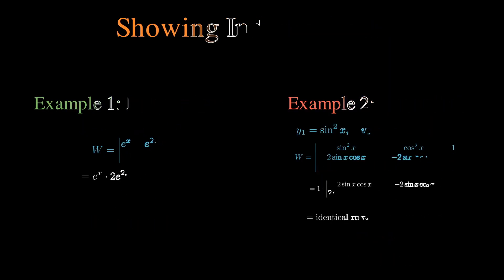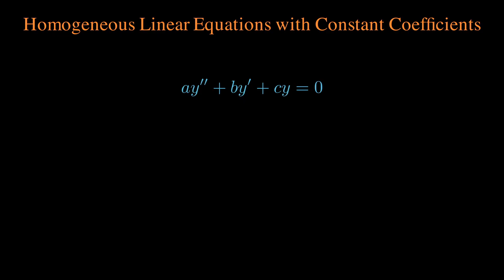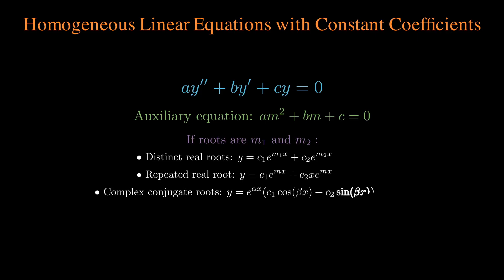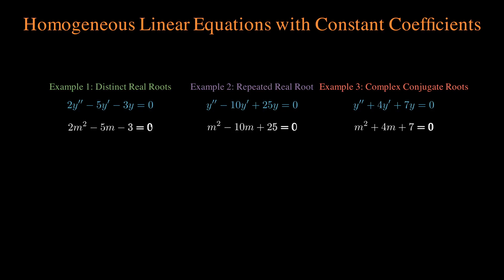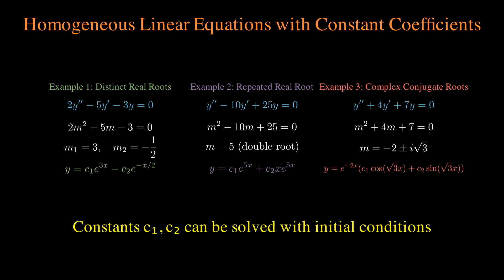Let's solve a really easy example of homogeneous linear equations with constant coefficients — every single term in front of a y is some specific number. All you need to do is transfer it to its auxiliary equation, where every single derivative just becomes a power in a polynomial. You solve for the roots, and depending on what the roots are, there is a specific formula for the general solution. Notice that each solution has two different terms, and since there are two of them they form the general solution. The constants can then be solved through a system of equations with two different initial conditions.